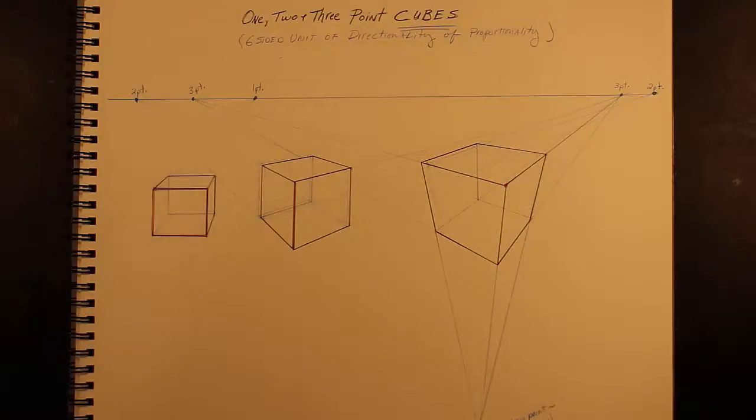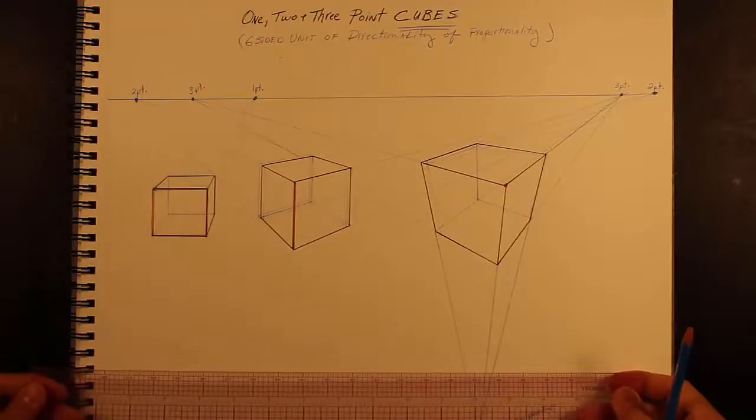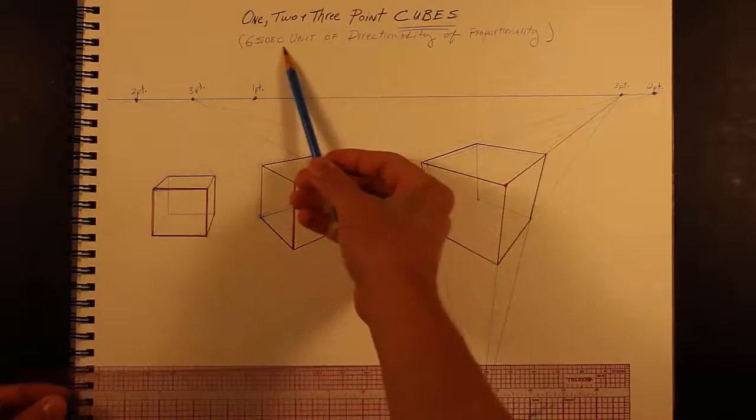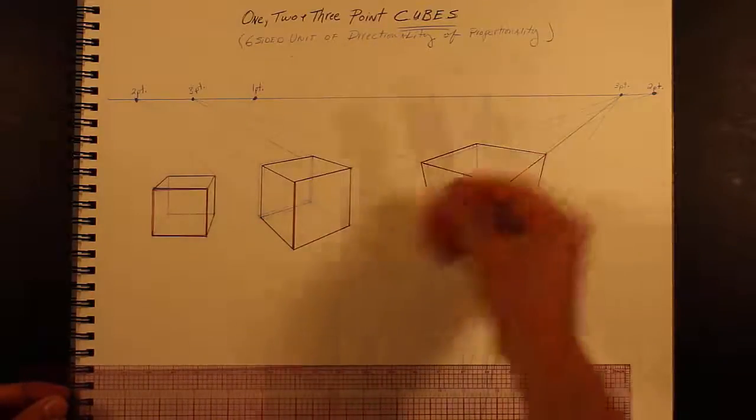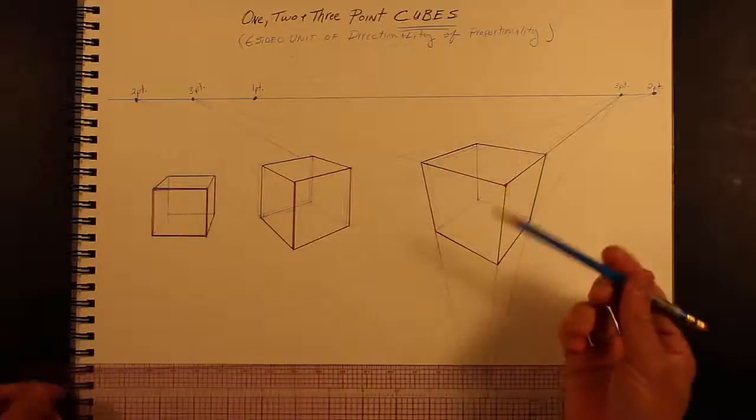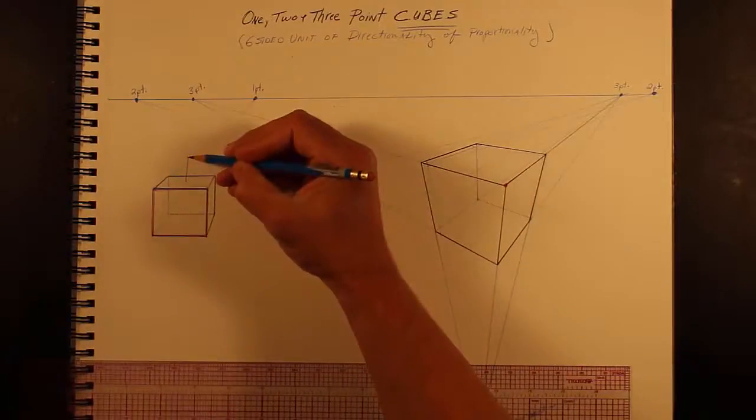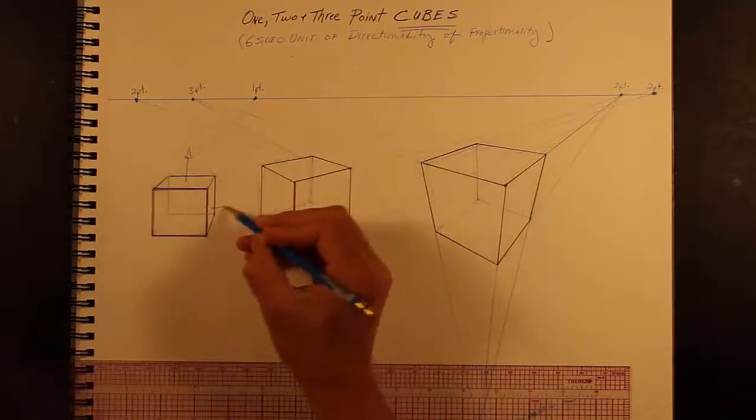Okay, one, two, and three point cubes. Why is the cube so important? It's because it's a six-sided unit of directionality and proportionality, meaning that there are six sides that indicate the major directions.